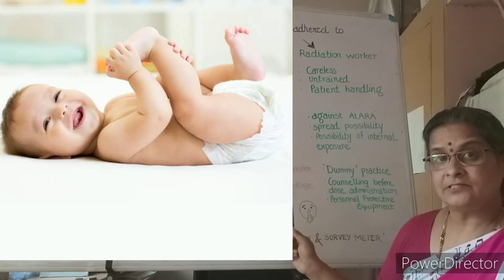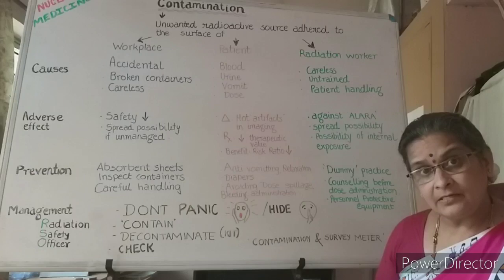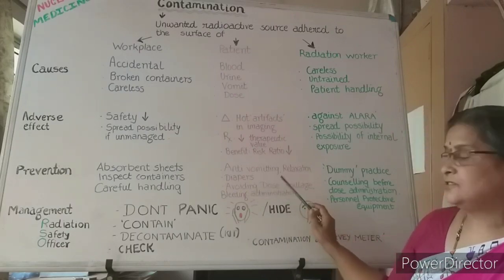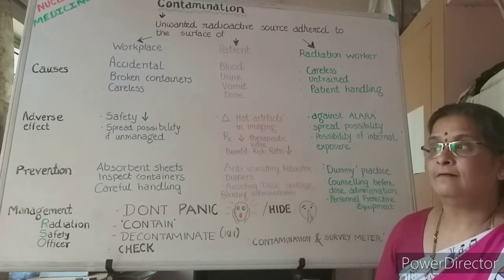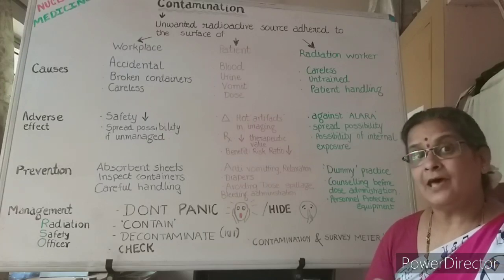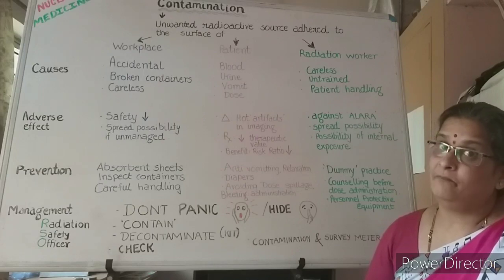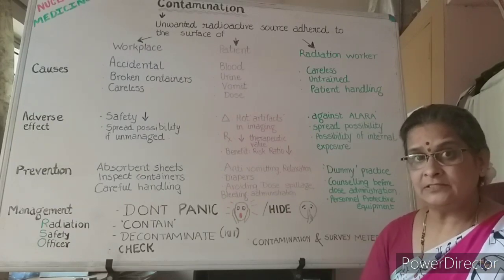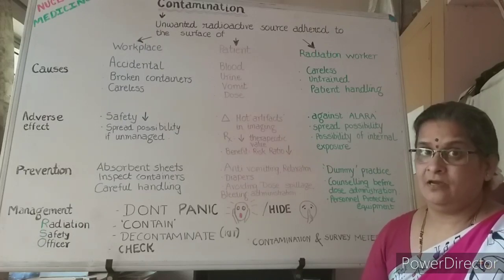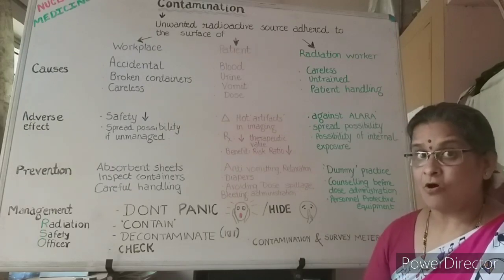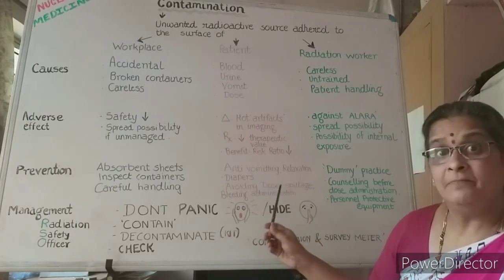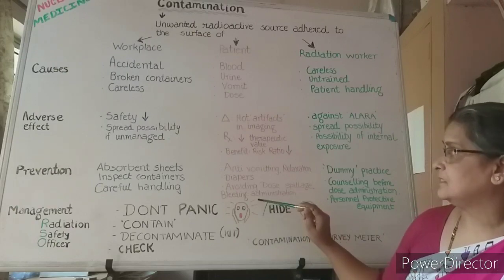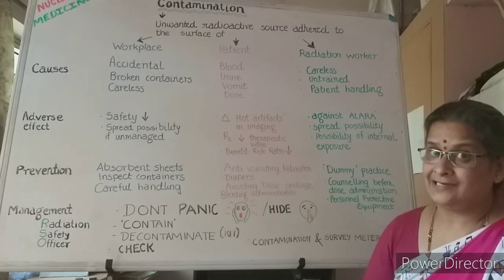Diapers should be used to contain the radioactive urine of pediatric patients or adult patients who do not have urine control. Spillage of dose should be avoided — when administered through an intracath, it should be opened properly so radioactivity goes completely inside, and the cord and three-way should be tightly closed once finished. These precautions prevent blood reflux or the radioactive dose itself from coming out and sticking on the patient's body.